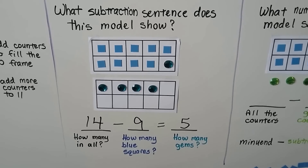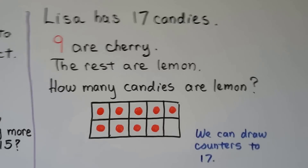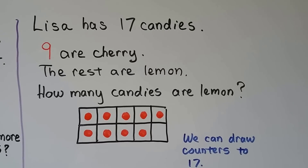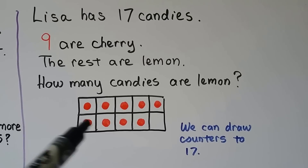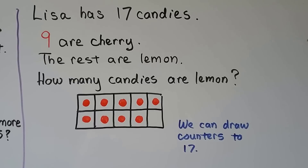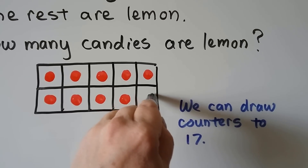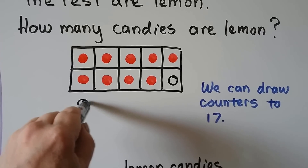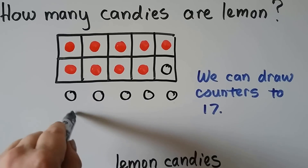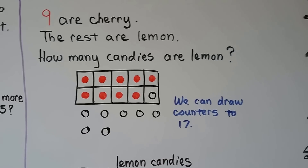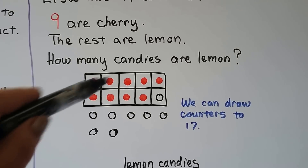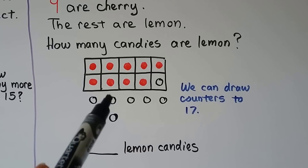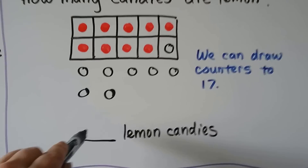We made a subtraction sentence. Lisa has 17 candies — 9 are cherry and the rest are lemon. How many candies are lemon? She has 17 in all. We can draw counters to 17: finish the 10 frame, put 1 here — that's a lemon candy, now we have 10 — eleven, twelve, thirteen, fourteen, fifteen, sixteen, seventeen. So if 9 are cherry, the rest are lemon. We drew 1, 2, 3, 4, 5, 6, 7, 8 — there are 8 lemon candies.